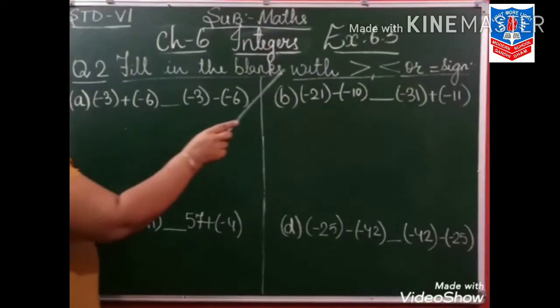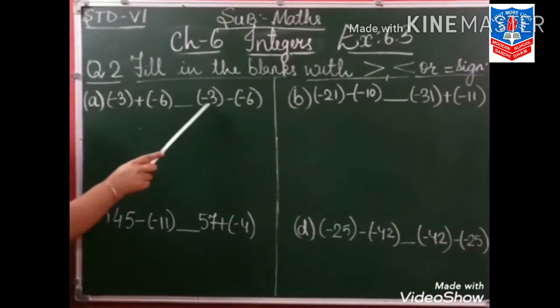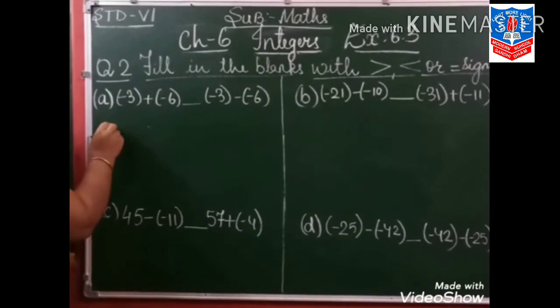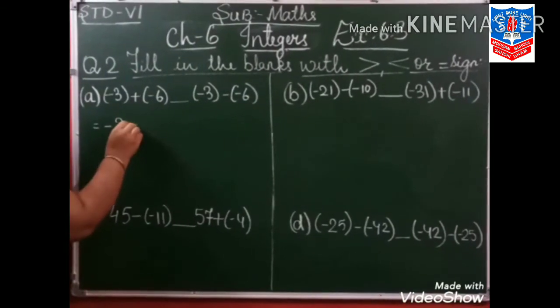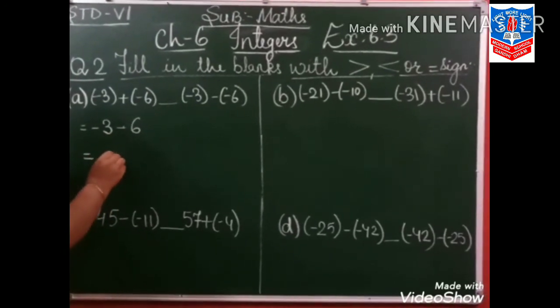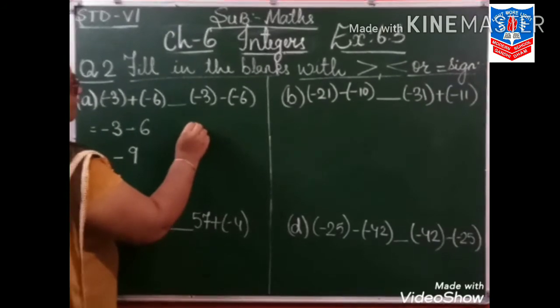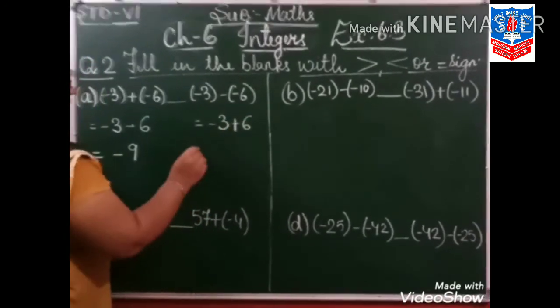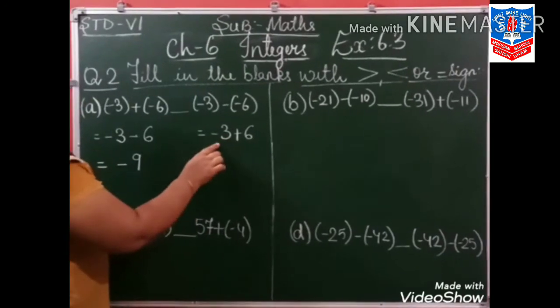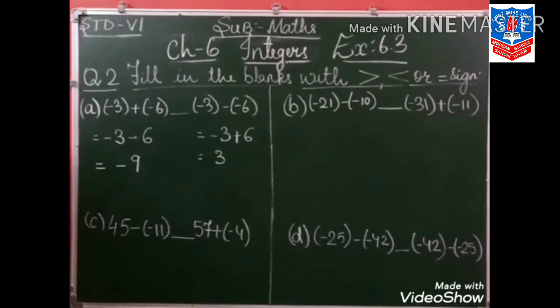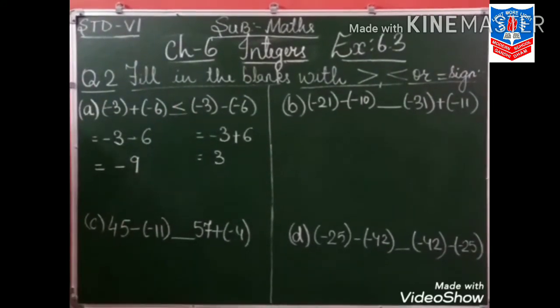Question number 2: fill in the blanks with greater than, less than, or equal to sign. Minus 3 plus minus 6, and minus 3 minus minus 6. We will first solve. Minus 3 plus minus 6 — minus minus is plus, so 3 plus 6 is 9, and the greater sign is minus 9. Now minus 3 minus minus 6 — minus minus is plus, so 6 minus 3 is 3, and the greater sign is plus. Which is greater — minus 9 or 3? 3 is greater, so we will put the sign accordingly.